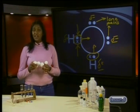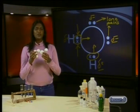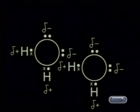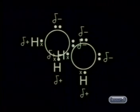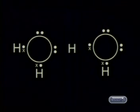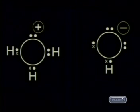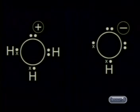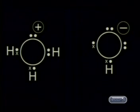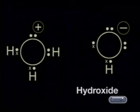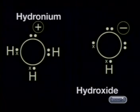Sometimes something very interesting takes place between two water molecules. The hydrogen atom is attracted to one of the lone pairs of another water molecule. This force of attraction is sometimes strong enough to pull the hydrogen away from the original water molecule. The hydrogen leaves its electron behind and attaches to the lone pair. The first water molecule becomes OH⁻ with a charge of negative one — this is called the hydroxide ion. The second water molecule becomes H₃O⁺ — this is called a hydronium ion.